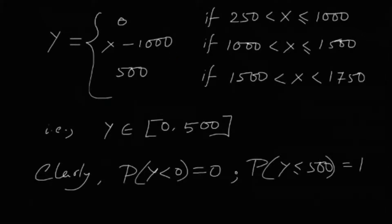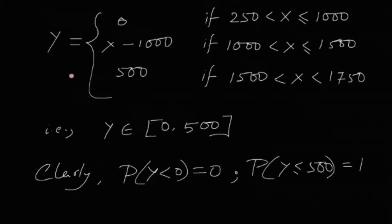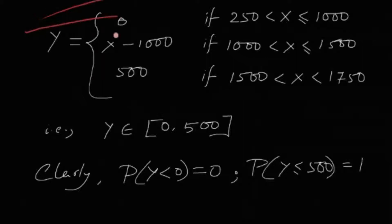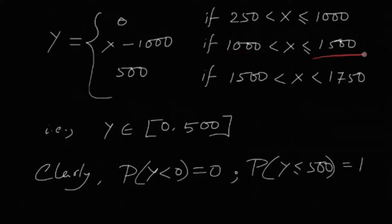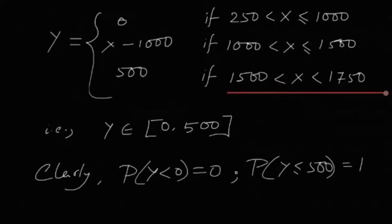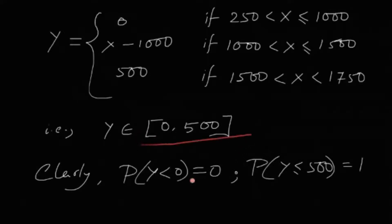Y is a random variable lying between 0 and 500. Writing Y in terms of X is the key step in this problem — everything else follows easily. So Y = 0 if X is between 250 and 1000; Y = X − 1000 if X is between 1000 and 1500; and Y = 500 if X is between 1500 and 1750, since the insurance cannot give more than 500 rupees.